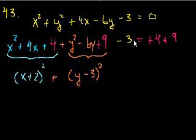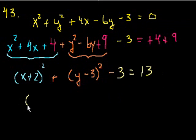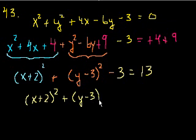And then let me just keep the minus 3 there for now, minus 3 is equal to 4 plus 9. 4 plus 9 is equal to 13. Let's add the 3 to both sides of that equation. So you get x plus 2 squared plus y minus 3 squared is equal to 16.